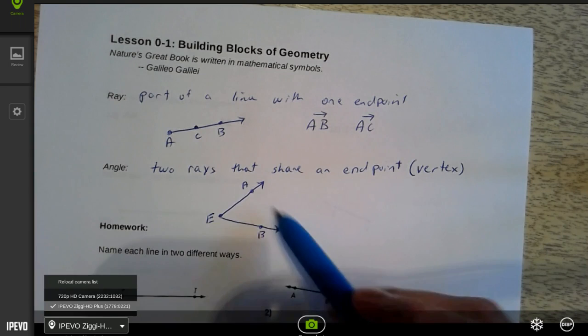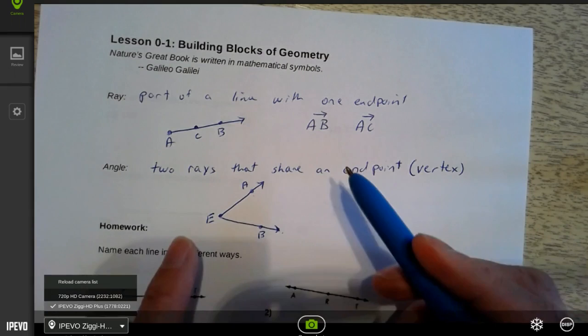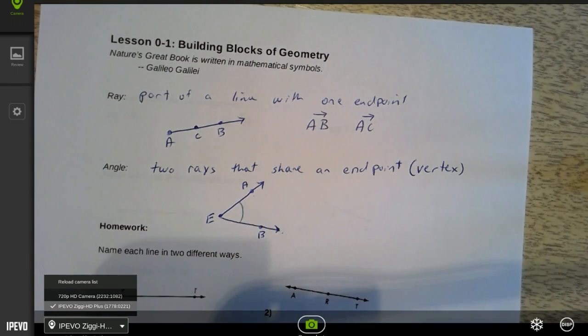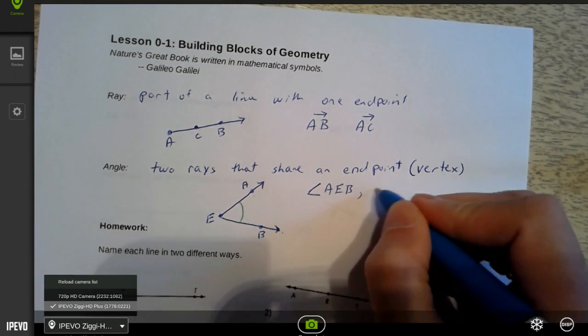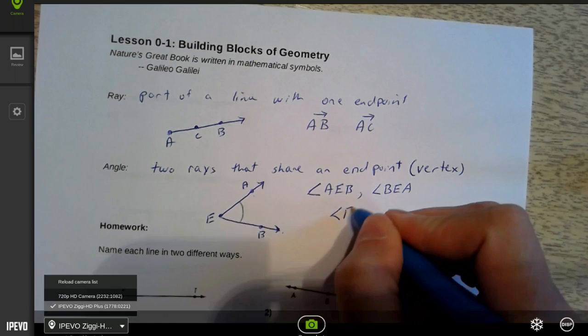Remember, the angle is actually the entire figure. It's not part of it. It doesn't have a length. You can't measure how long an angle is. That doesn't make sense. We can measure how much it opens in degrees. That's something we're used to doing. When we name our angle, we use an angle symbol. And I can call it AEB. I can call it angle BEA. Or I could just call it angle E.